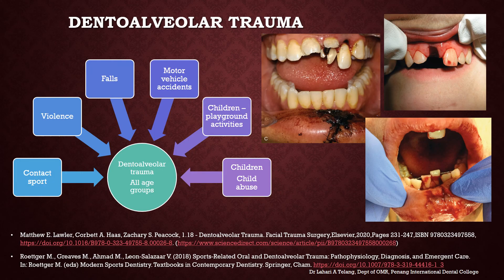When talking about dental alveolar trauma, it can happen to persons of all age groups. The causes range from contact sports, violence, falls, and motor vehicle accidents, to children sustaining trauma to the dental alveolar structures due to playground activities or even child abuse. These are some images showing how dental alveolar trauma looks, ranging from avulsion of teeth to tooth fractures, alveolar fractures, and soft tissue trauma.